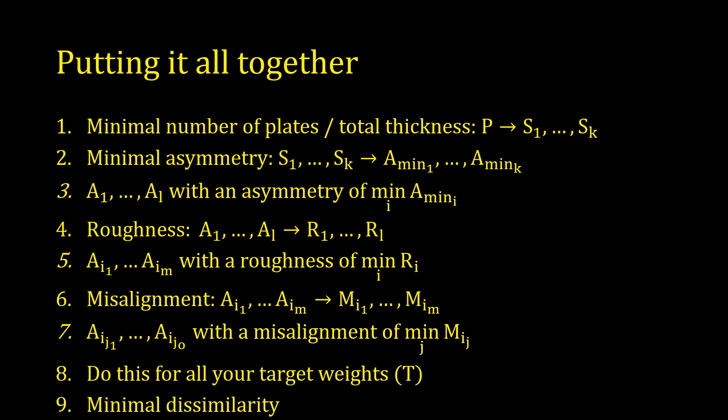Then, calculate the minimal asymmetry for all these subsets. As a third step, return all arrangements of these subsets that have the lowest minimal asymmetry.